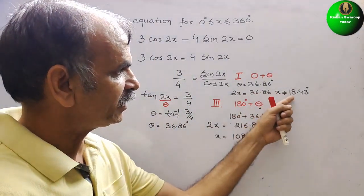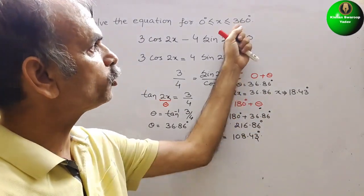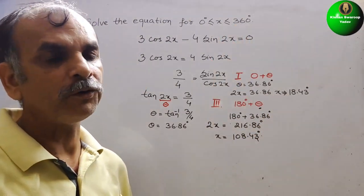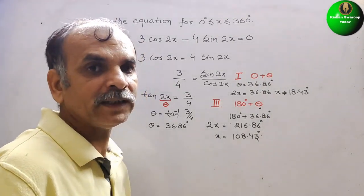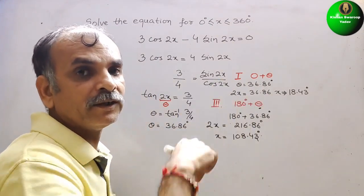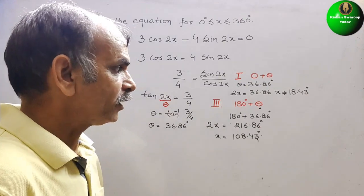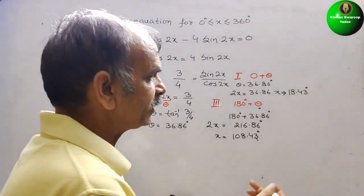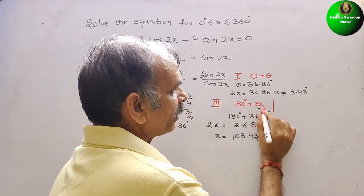But the difference is, see, 18 and 108. We have to go up to 360 degree. So how we will do? Now we will take one more: 360 degree plus theta.